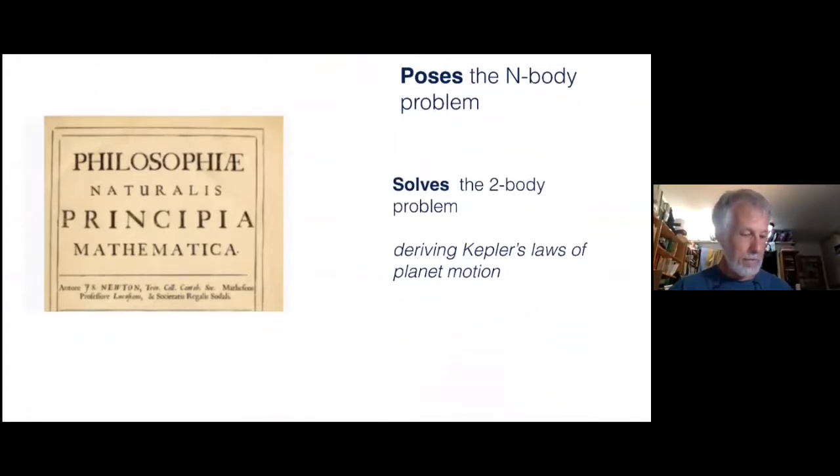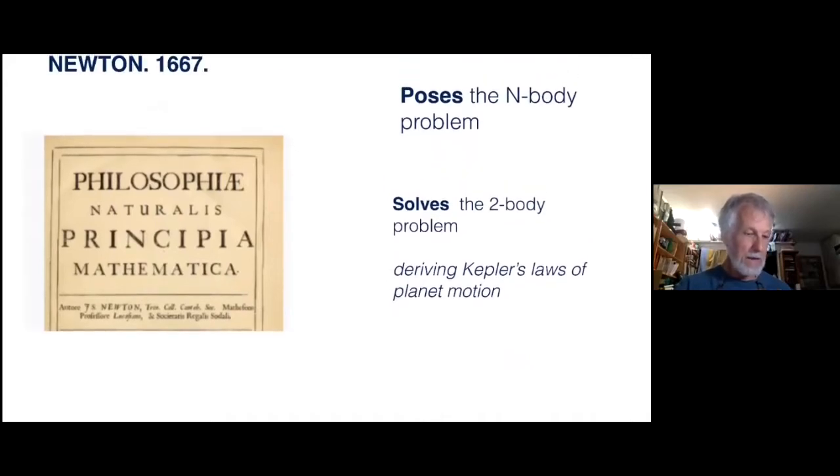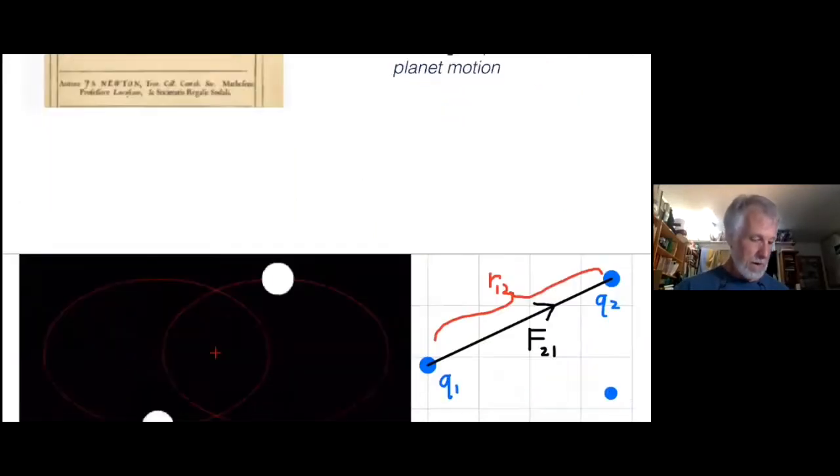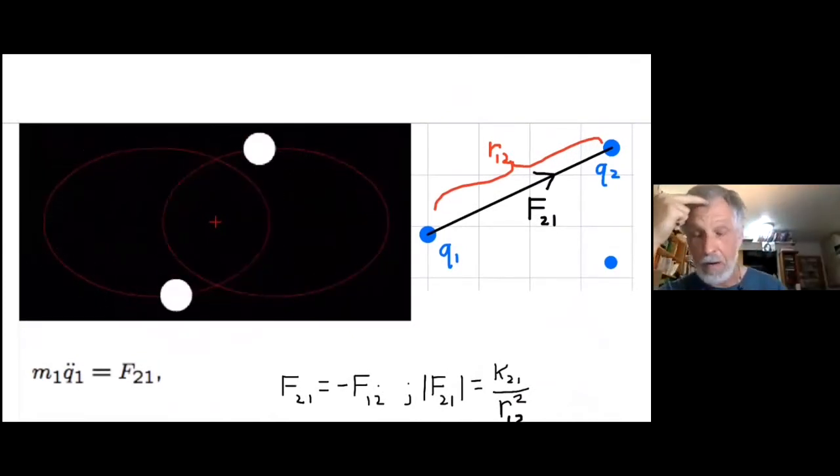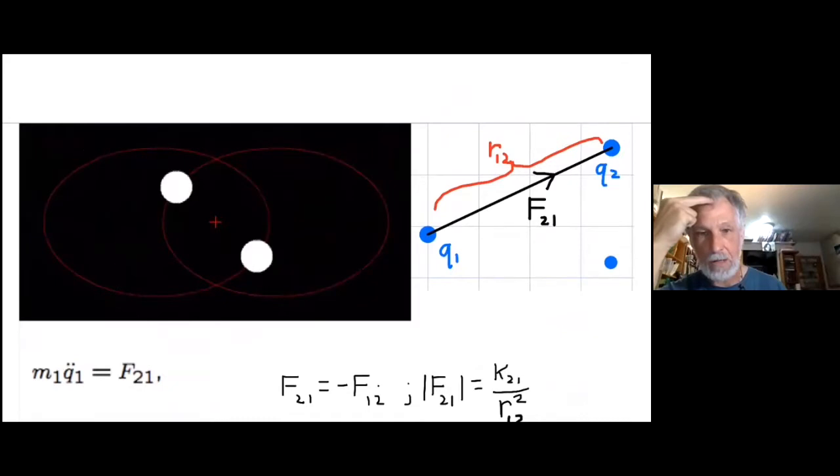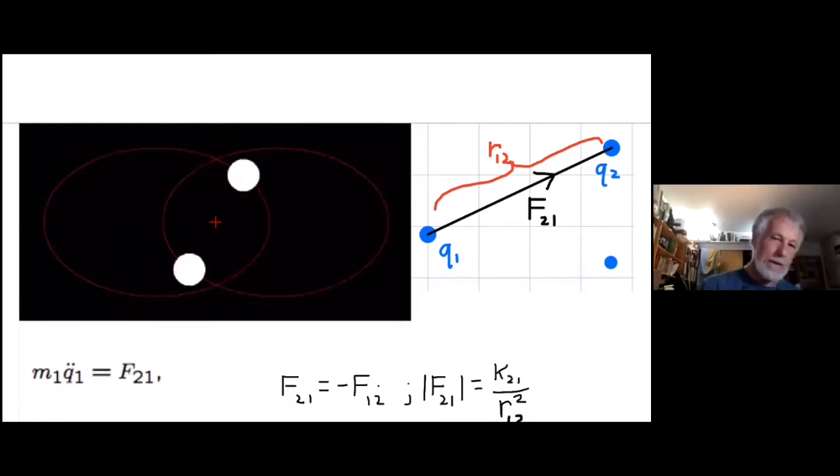So what I'm going to do is start with a tour of the N-body problem, and then get into the specific problems that I have posed, the open questions. So 1667, Newton publishes the first version of the Principia. He states the N-body problem, allegedly has headaches trying to solve the three-body problem. He solves the two-body problem and thereby derives Kepler's laws of planetary motions.